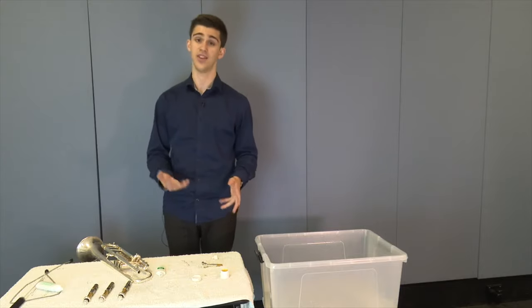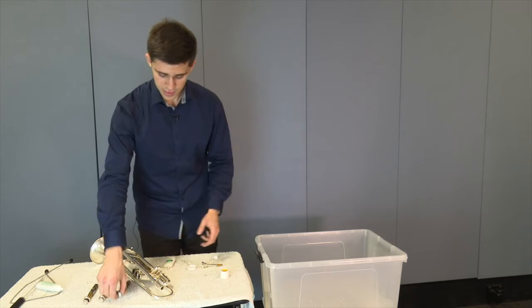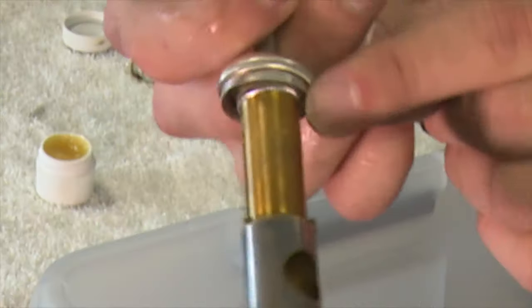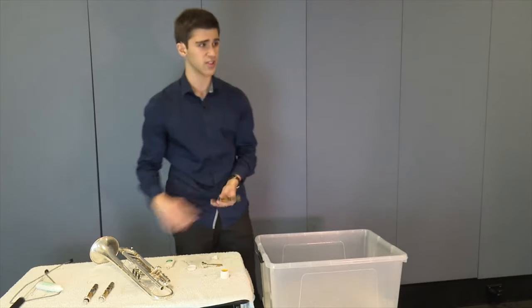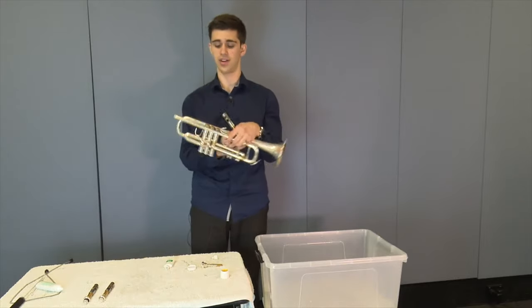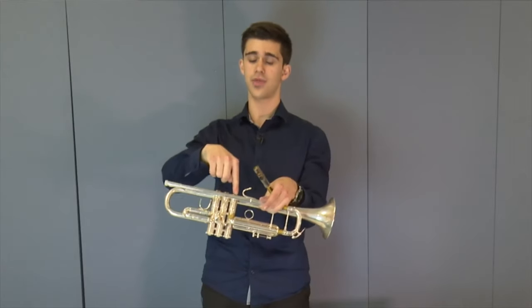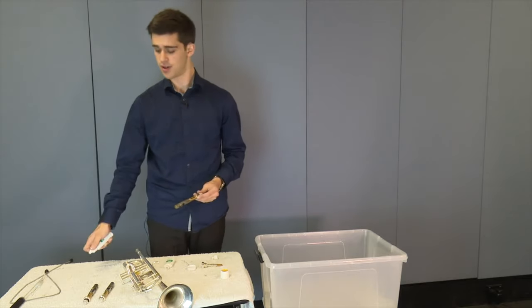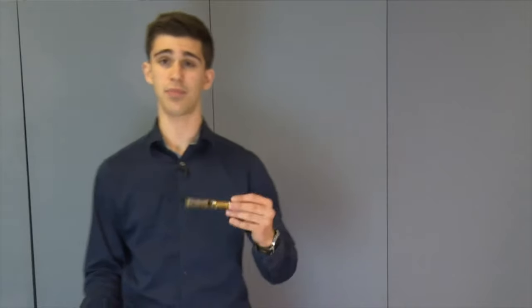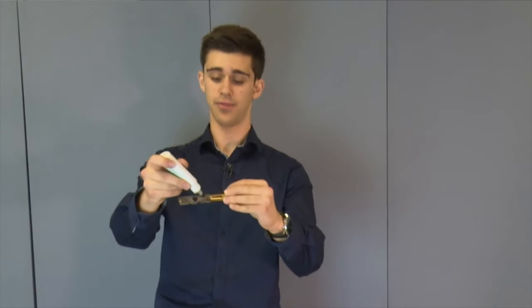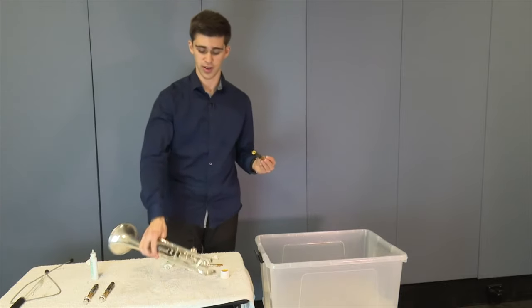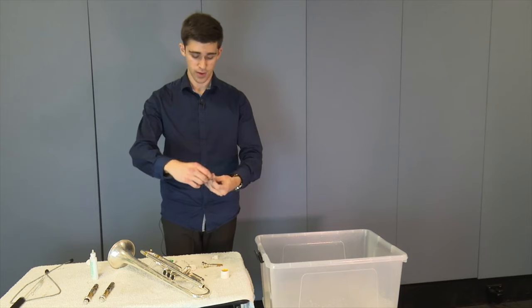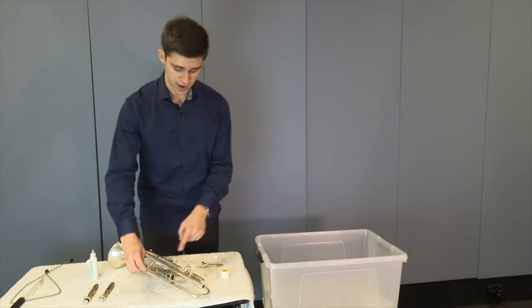Now that we've fully assembled the trumpet slides, it's time to move on to the valves. What we want to make sure is that we grab the valve with the number one on it. All trumpets have a number one, two, and three on their valves, which correspond to valve number one being closest to the player, two being in the middle, and three being closest to the bell, or further away from the player. So what we want to do is get our valve oil and apply it onto the silver part of the valve.